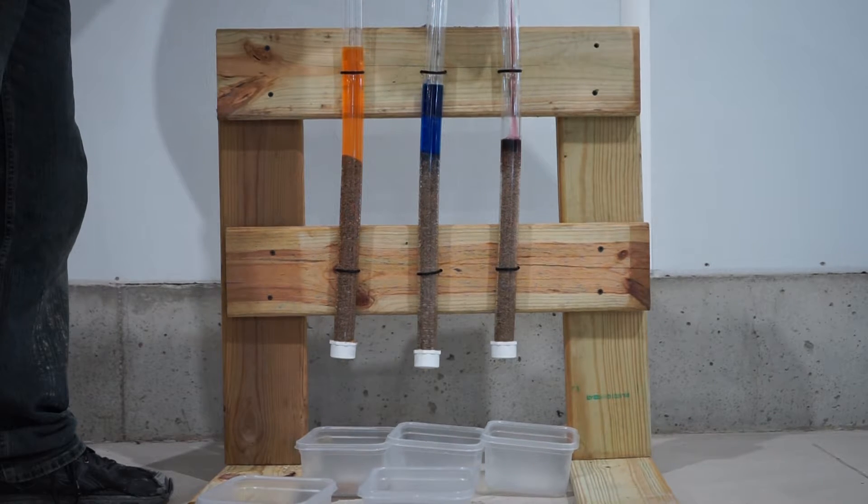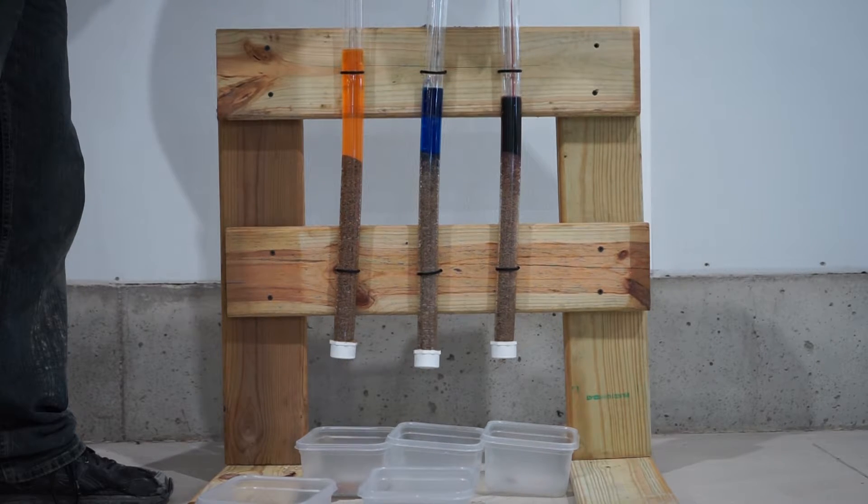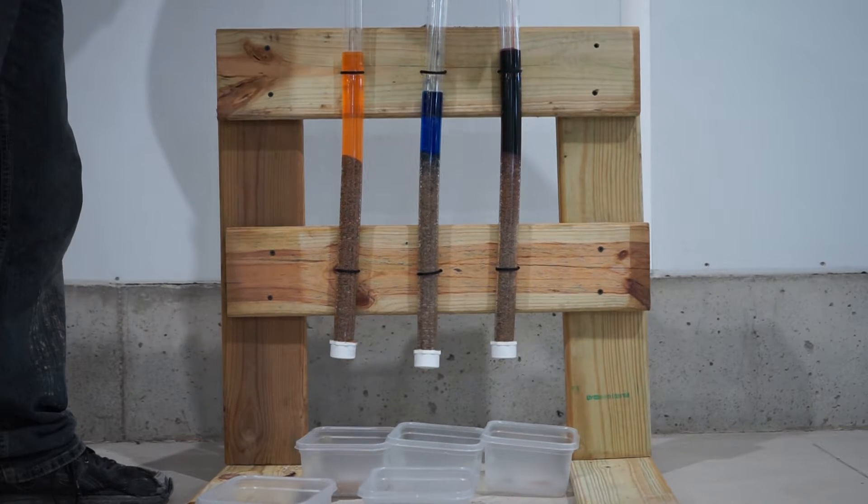So what this demonstration is trying to represent is the multiple forms of nitrogen that you have in the soil. The orange, the negatively charged, is going to be your nitrate, your NO3. The blue is going to be the positively charged ammonium form, NH3.